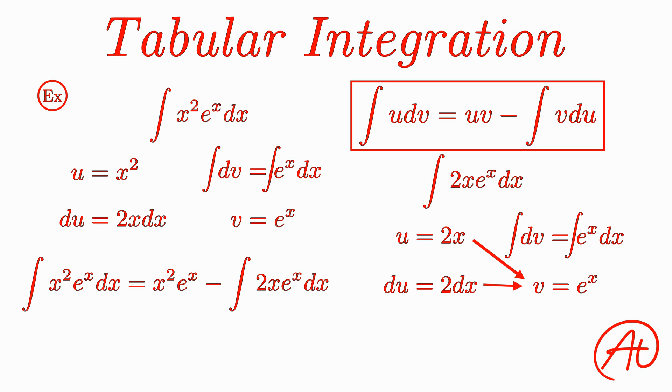Throwing this together, we get that this integral of 2x times e to the x is equal to 2x times e to the x minus the integral of 2 times e to the x.